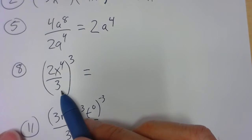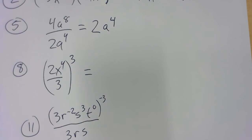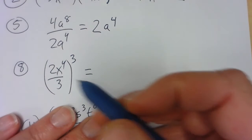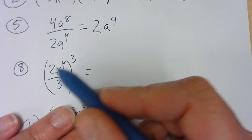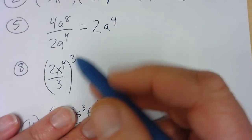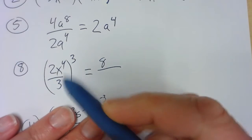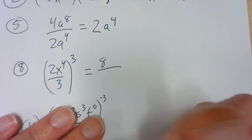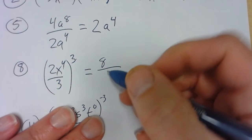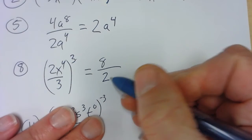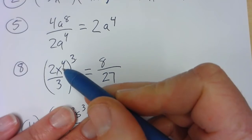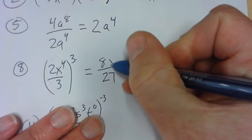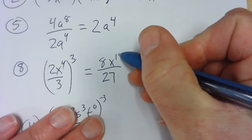I had a chance to copy some of these down when the custodian came in to get the trash out of my room. So it's 2 to the 3rd power — 2 to the 3rd is 8. 3 to the 3rd is 3 times 3 times 3, which on your colored paper is 27. And then when you have an exponent raised to an exponent, we multiply — so it's x to the 12th.